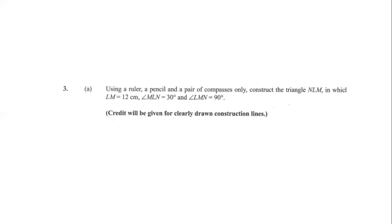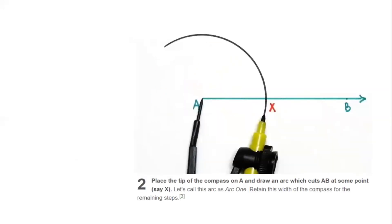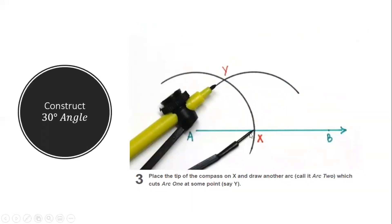To construct a 30-degree angle, first draw a ray and label it AB, with A as the vertex. Place the tip of the compass at A and draw an arc cutting AB at a point X — call this arc 1. Keeping the same compass width, place the tip at X and make another arc on arc 1 — call this arc 2. The intersection of arc 1 and arc 2 gives a 60-degree angle from point A through intersection Y.